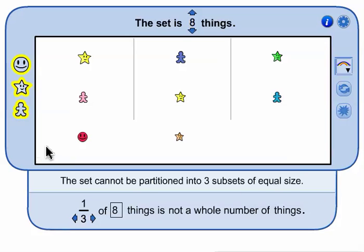The picture shows that a set of 8 things cannot be equally partitioned into 3 subsets of equal size.